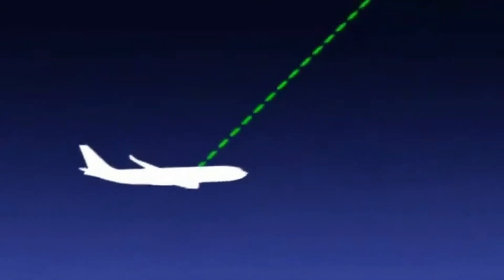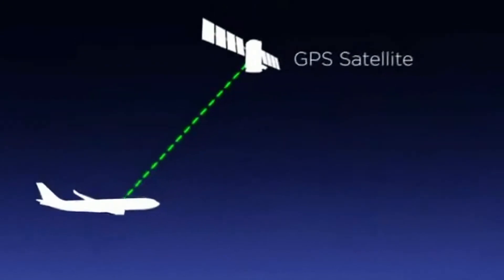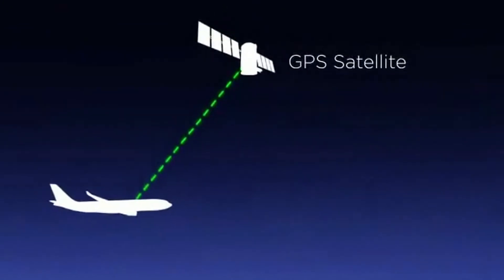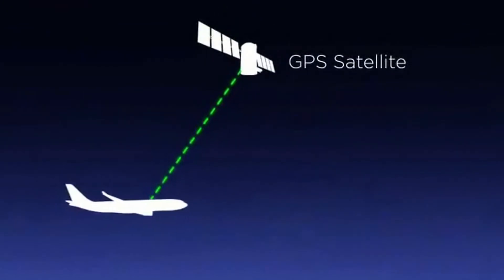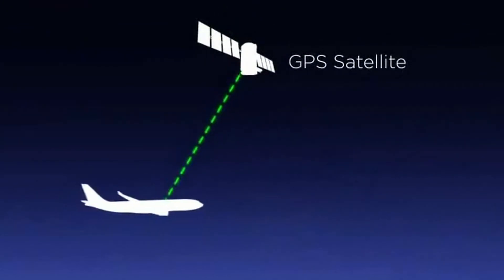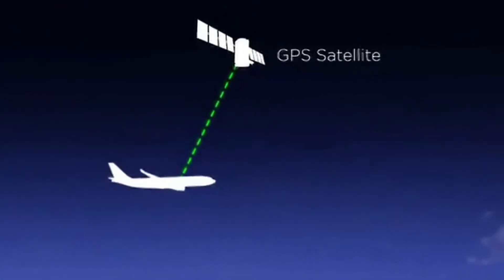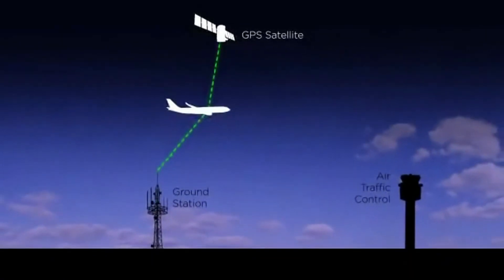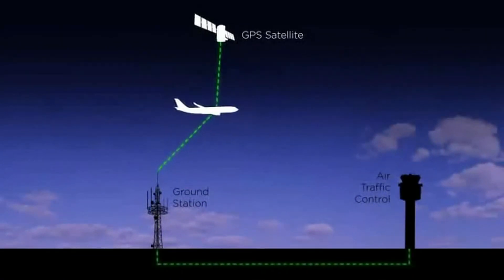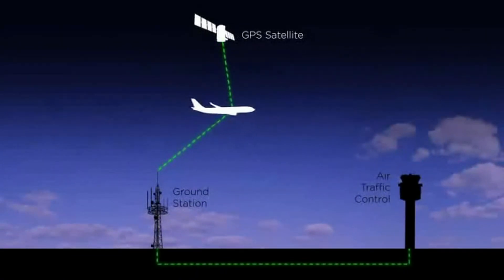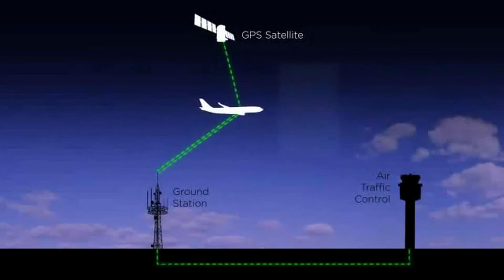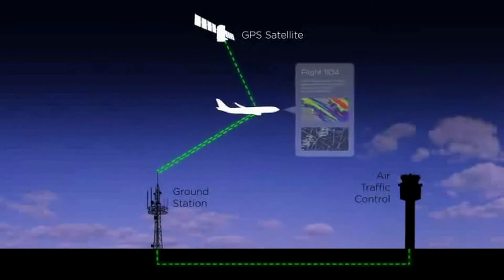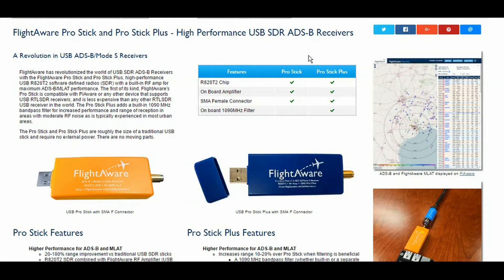From 2020, the FAA and other aviation authorities have mandated that manned aircraft need to be fitted with ADS-B should they fly in certain sorts of airspace. So, to be able to track ADS-B traffic is going to be a more useful, not less useful thing.